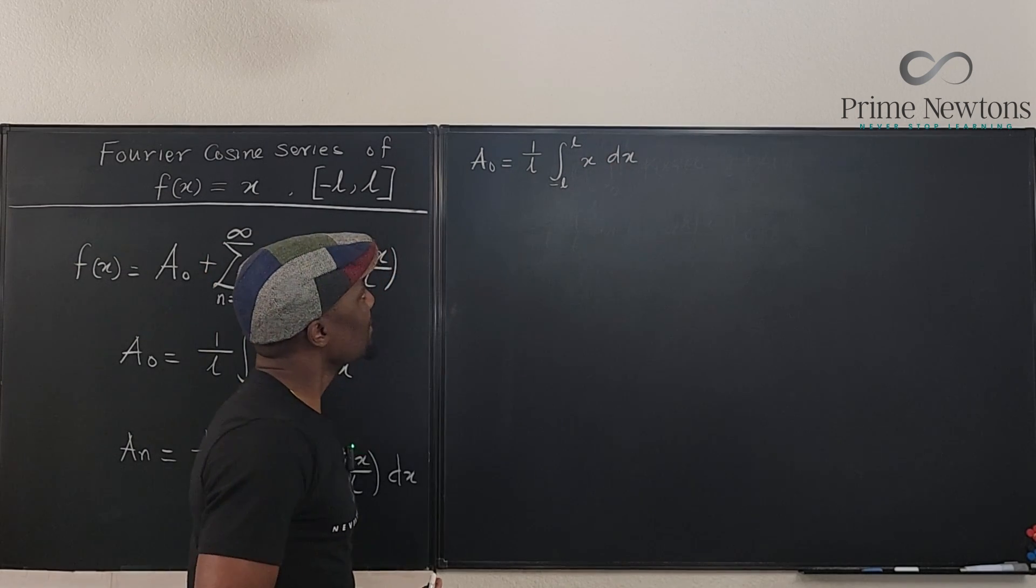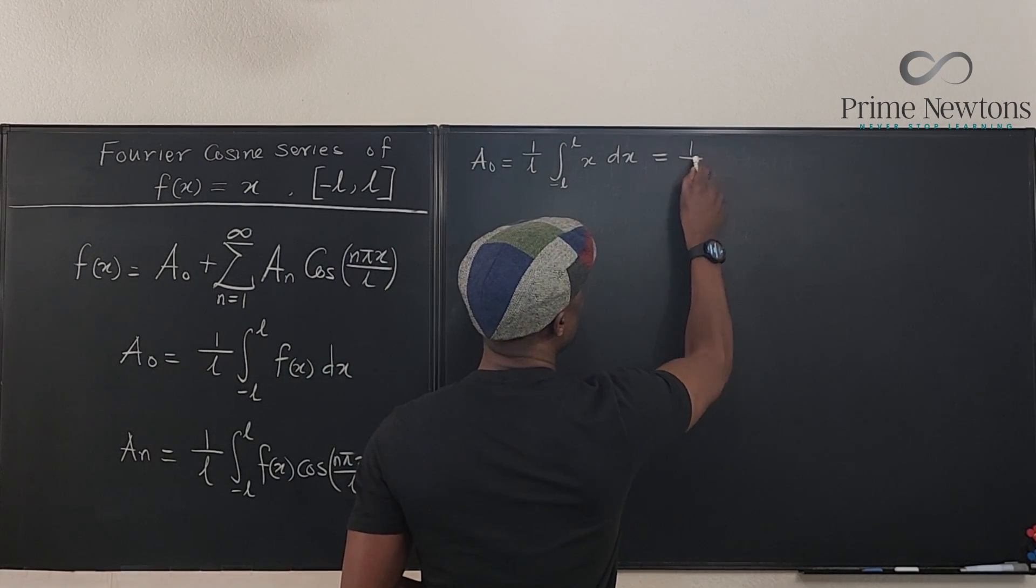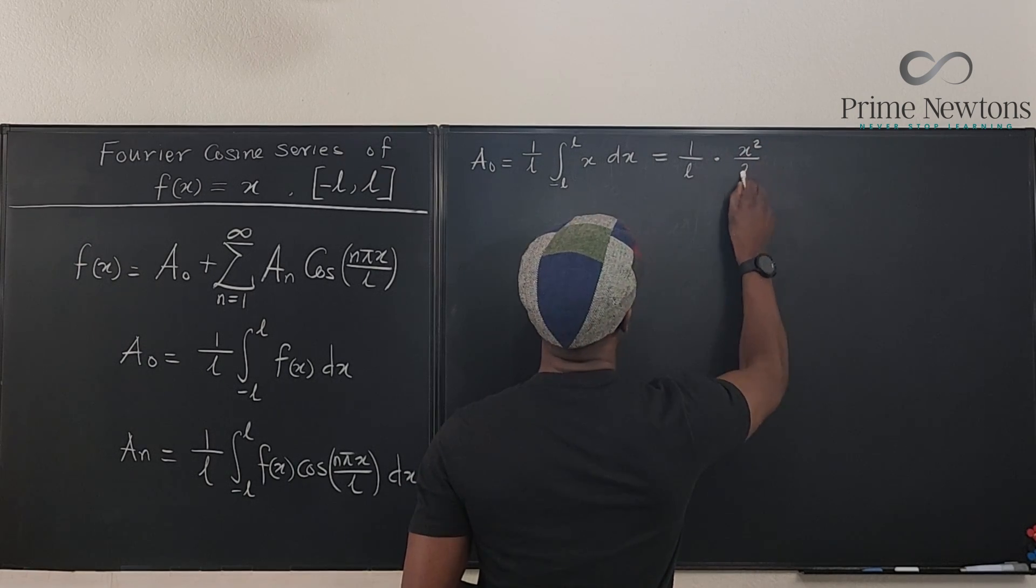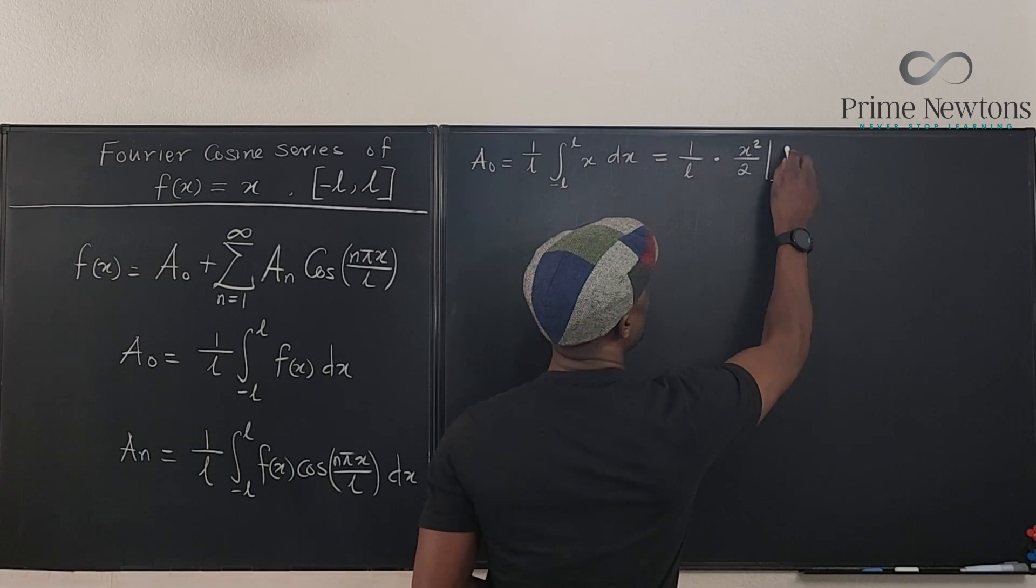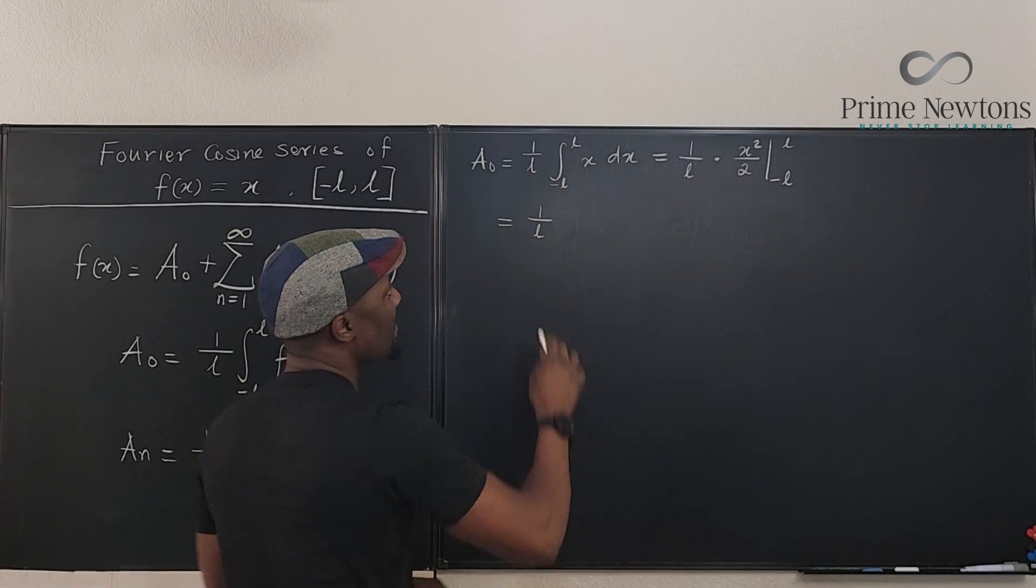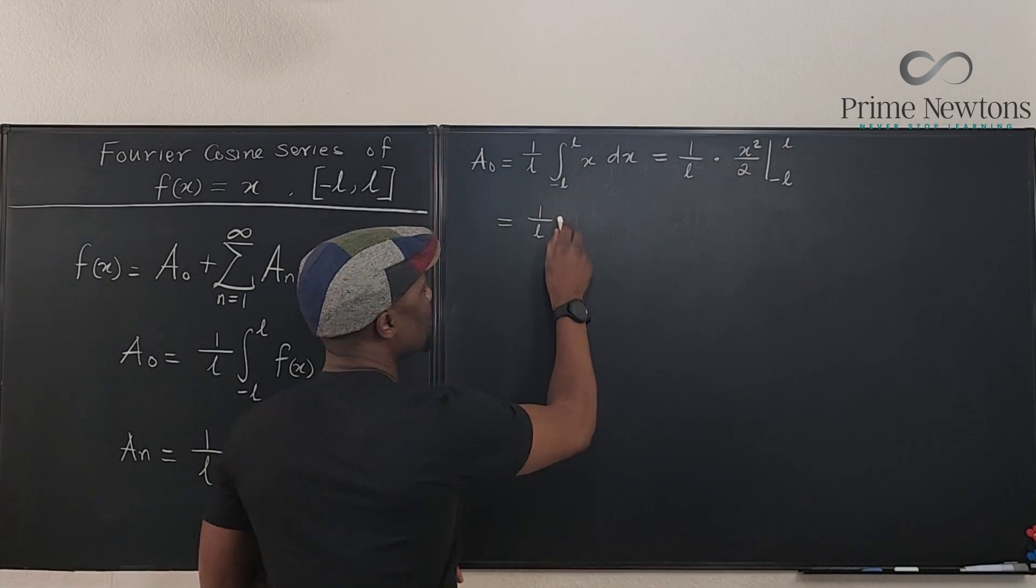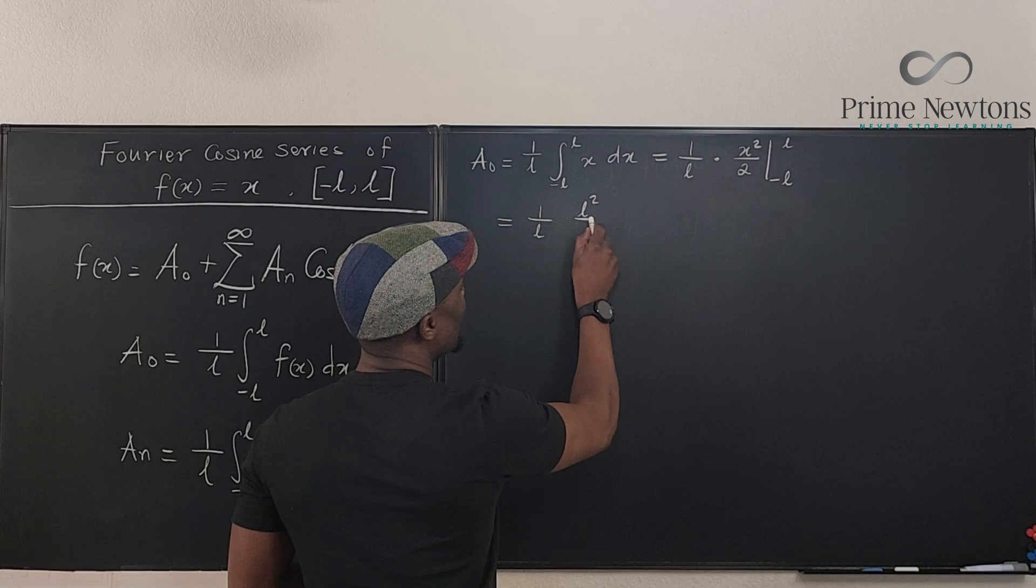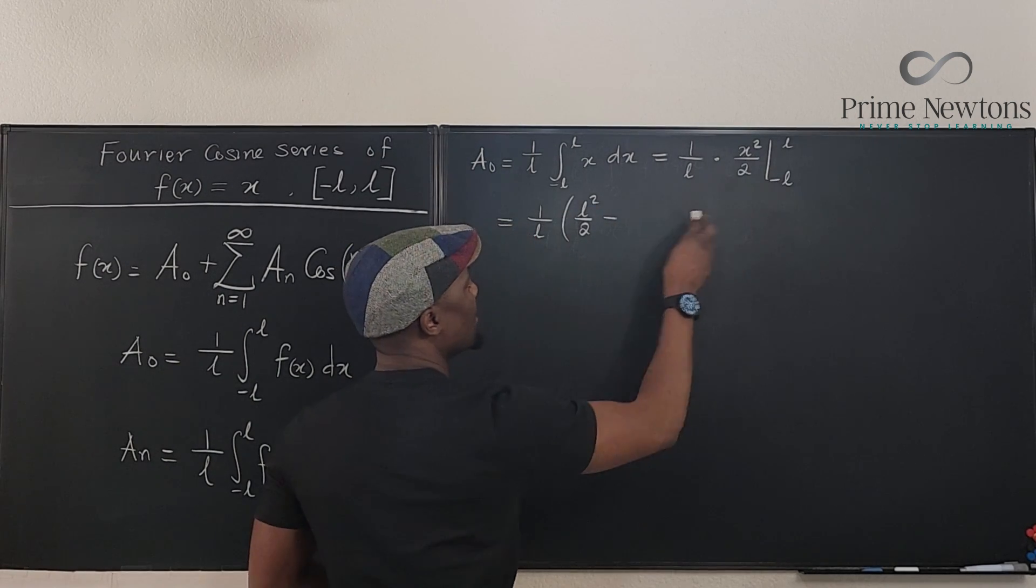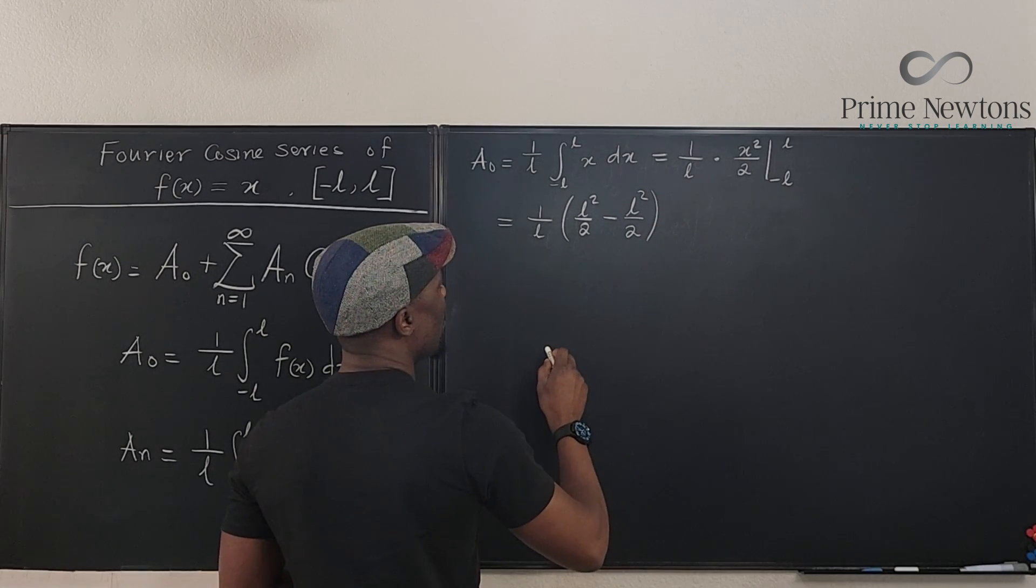Nice. So what does this give us? Well, this is the same thing as 1/L times x²/2 evaluated from negative L to L. What does that give me? It gives me 1/L. If I plug in L here, it's going to be L²/2. That's going to be L²/2 minus. If I plug in negative L here, it's going to be L²/2. No way.